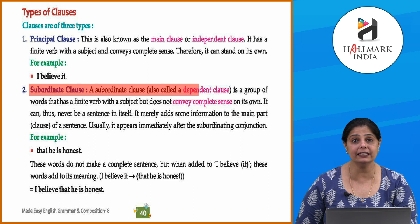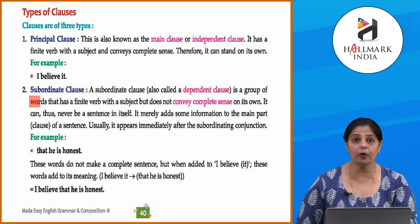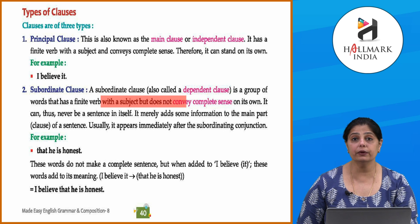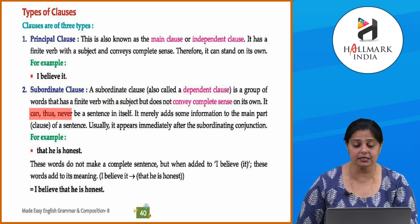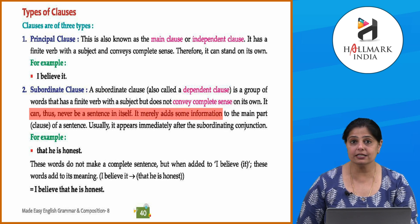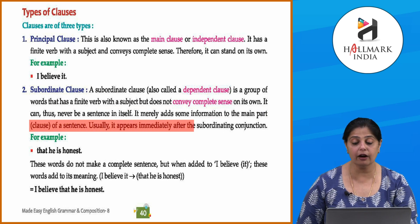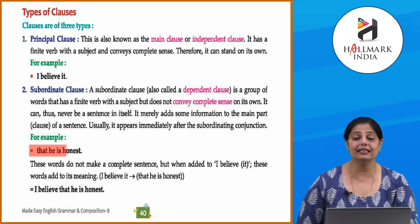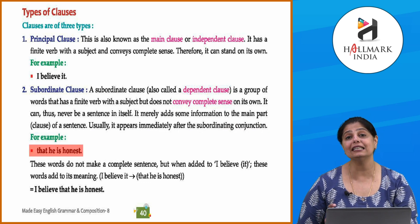A subordinate clause is also known as a dependent clause. It is a group of words that has a finite verb with a subject but does not convey complete sense on its own. It can never be a sentence by itself; it merely adds information to the main part of a sentence. Usually it appears immediately after a subordinating conjunction. For example, 'that he is honest' alone does not make any sense.